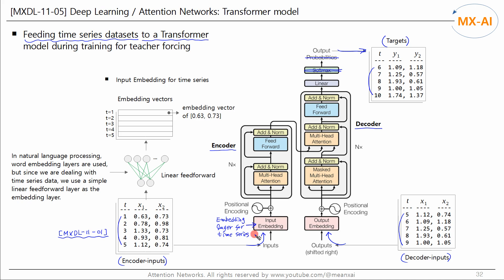An embedding layer for the time-series is added to the input layer. In natural language processing, word embedding layers are used, but since we are dealing with time-series data, we use a simple linear feedforward layer for the embedding layer. The outputs of this layer are vector representations of the time-series data. In this example, the first row is the embedding vector for the first data point in the time-series. The size of the vector is a hyperparameter called D-model.